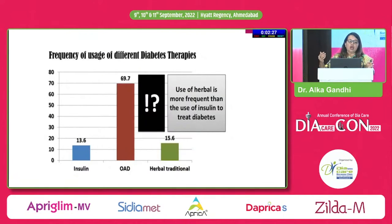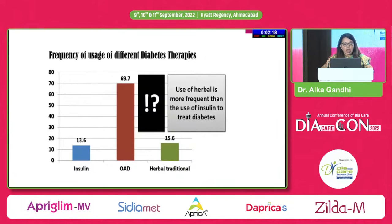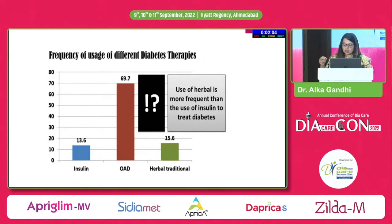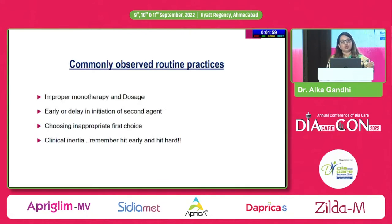In our country, with many followers of Ayurvedic and homeopathic therapies, anti-diabetic therapy usage shows OADs at almost 70%, insulin only 13.6%, and herbal medicine at 15.6% — more than the use of insulin, which is the basic treatment needed. Commonly observed clinical practice faults include improper monotherapy and dosage, early or delayed initiation of second agents, inappropriate first-choice selection and clinical inertia.